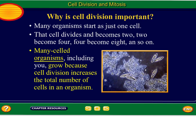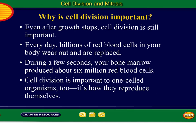These in the picture here are paramecia. These are protists — they're single-celled organisms. When they divide, they're really going through asexual reproduction. So asexual reproduction for a single-celled organism is almost the same thing as cell division for a many-celled organism. So that's why in your notes it says many-celled organisms grow because cell division increases the total number of cells. When the paramecia divide, they're not growing — they're reproducing.